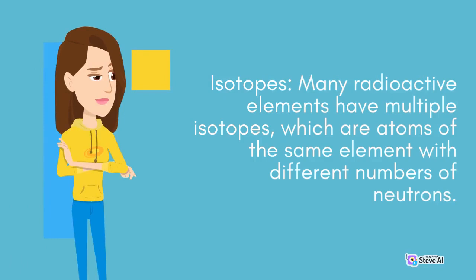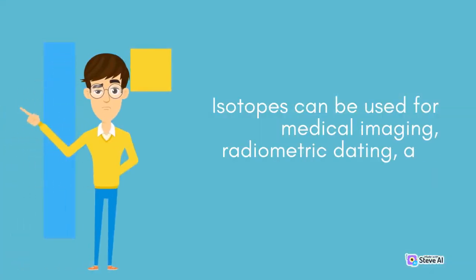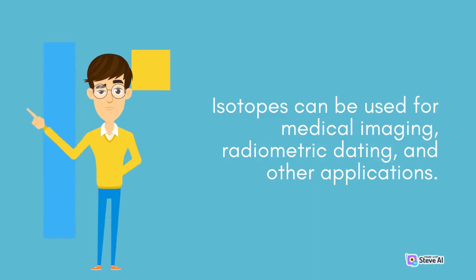Many radioactive elements have multiple isotopes, which are atoms of the same element with different numbers of neutrons. Isotopes can be used for medical imaging, radiometric dating, and other applications.